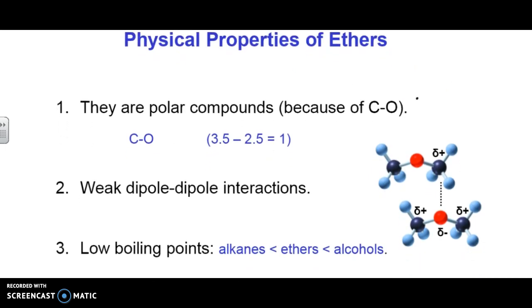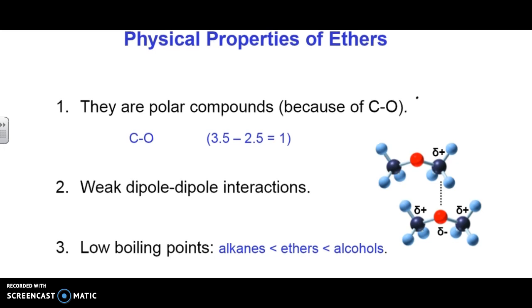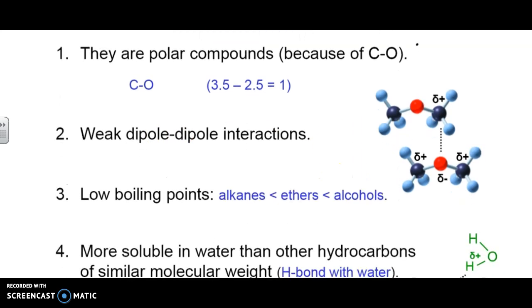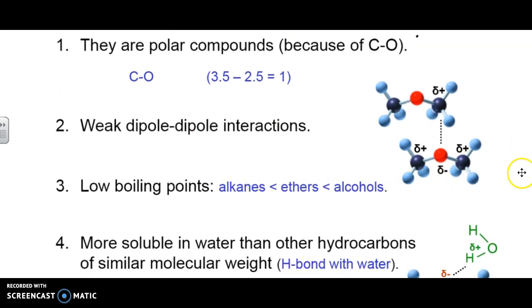So one of the things you're going to notice with ethers is they tend to be polar compounds, and that's because of the uneven draw of electrons between the carbon and the oxygen. So if you remember the electronegativity stuff from grade 11 and early in grade 12, that's what we're referring to. As a result of it being a polar compound, there's weak dipole-dipole interactions. There's no hydrogen bonding in these cases, so therefore it's got a relatively low boiling point.